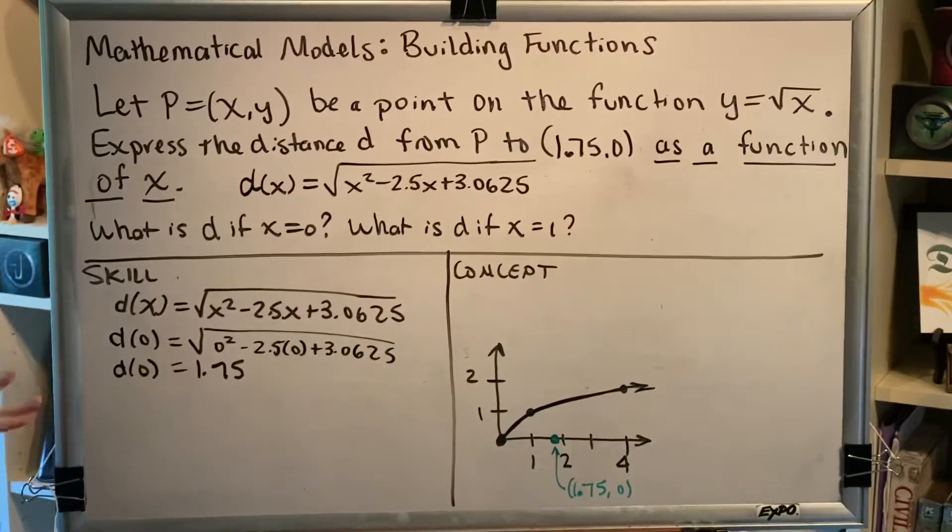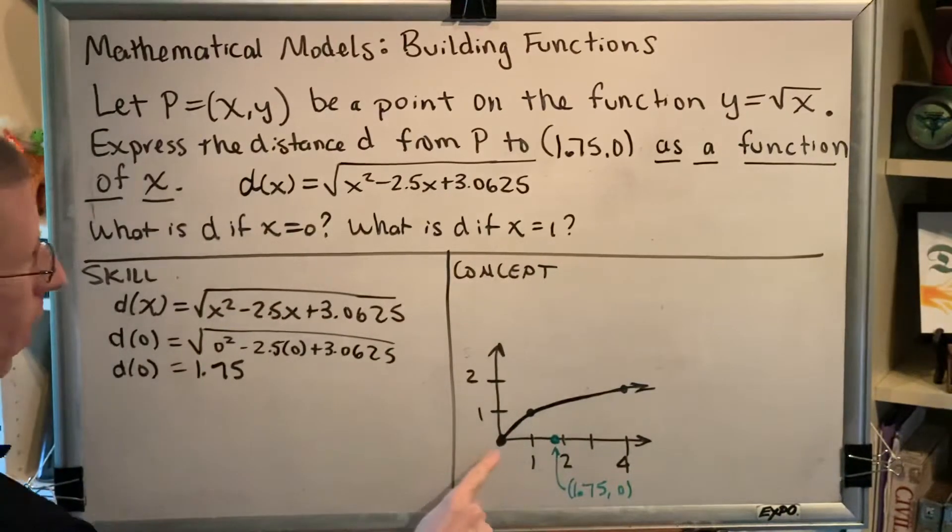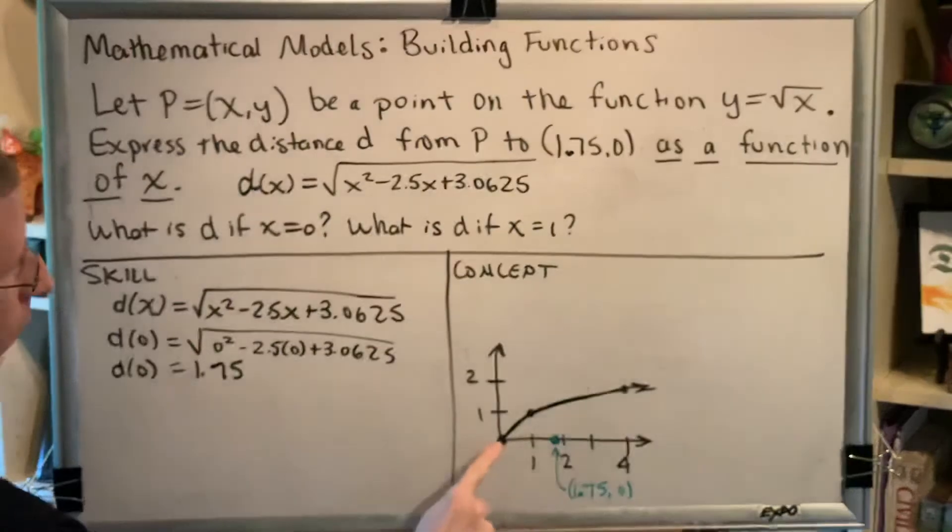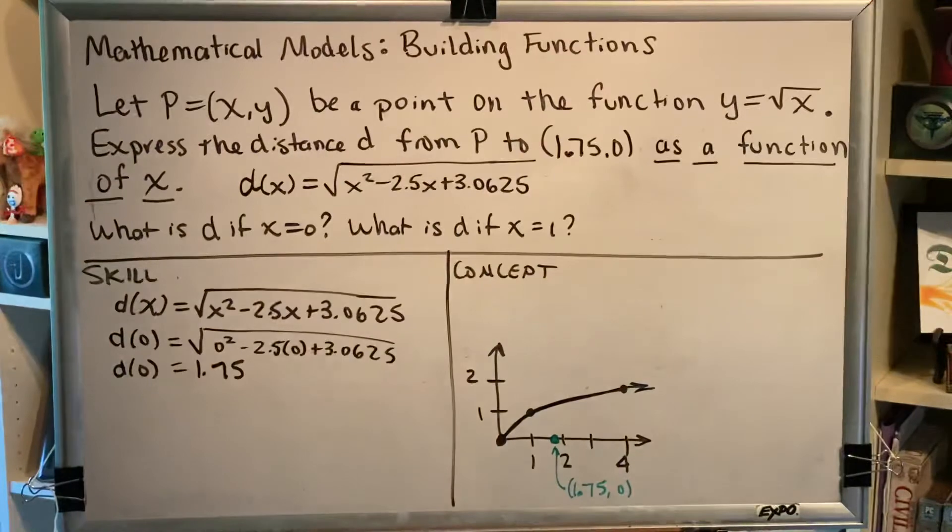That's the skill. When the point on the square root function that is selected has an x-coordinate of 0, then the distance from that point to the point (1.75, 0) will be 1.75.